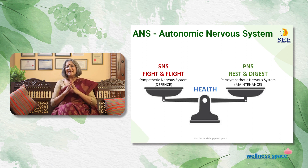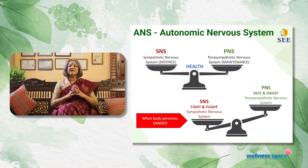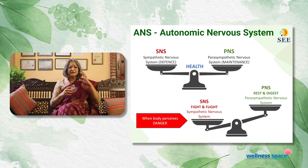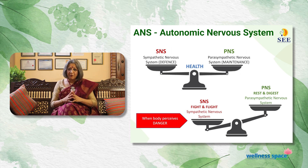When our body senses any danger — be it physical danger or a perceived danger — within a second, because of our inherent survival requirement, our autonomic nervous system quickly switches to the fight-or-flight mode. The sympathetic nervous system gets activated simply because the body perceives danger, and the moment it is activated, a whole bunch of physiological changes happen in your body, pretty much like how the army operates.